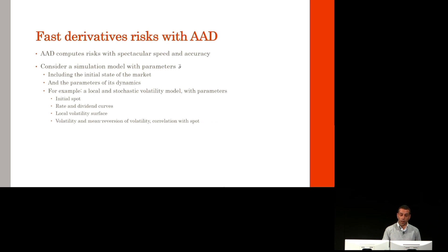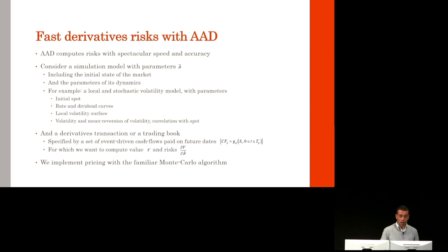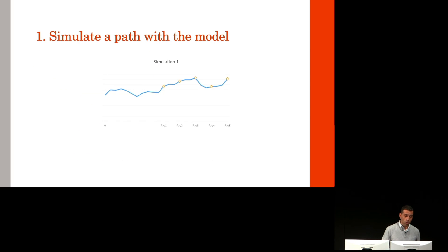I want to show you how we can bring it all together to get this magic speed for risk management. Consider a simulation model with parameters theta that includes the initial state of the market and the parameters of its dynamic evolution. For example, it could be a local and stochastic volatility model. We have a derivatives transaction in a trading book specified by a set of event-driven cash flows paid on future dates. And we want to calculate its value V and its risks, dV/dtheta. We do it with a familiar Monte Carlo algorithm. As usual, we simulate a path with a model, evaluate all the cash flows on this path, and evaluate the payoff, which is the discounted sum of the cash flows.